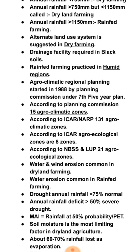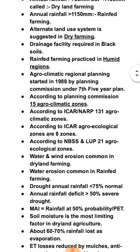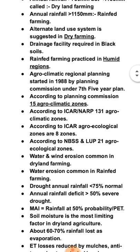According to ICAR under NARP, there are 131 agroclimatic zones. According to ICAR, agroecological zones are 8 zones. According to NBSS and LUP (National Bureau of Soil Science and Land Use Planning), there are 21 agroecological zones.